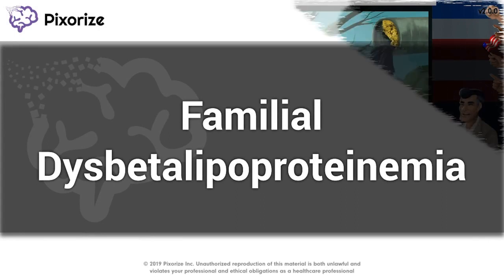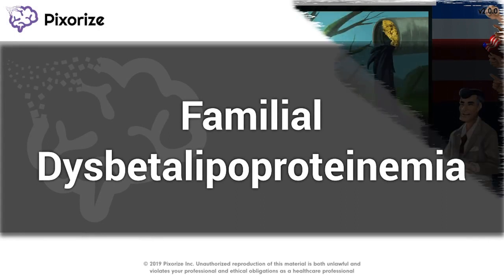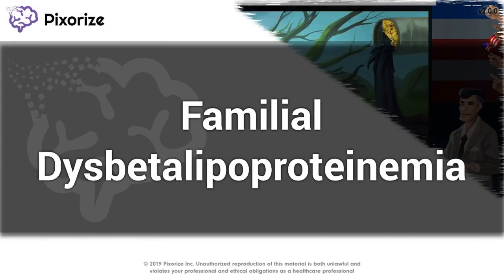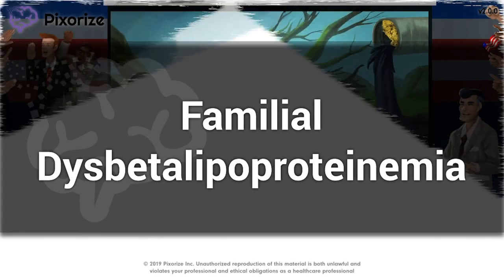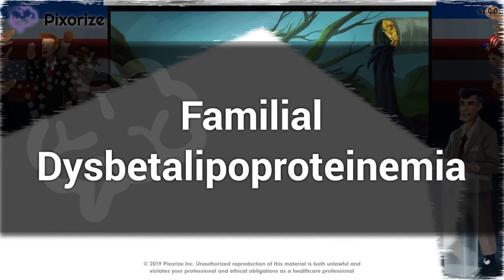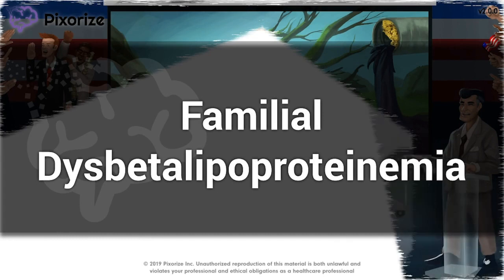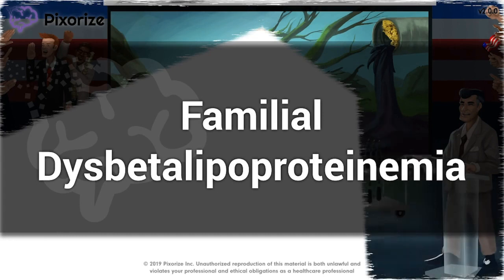Familial dysbeta lipoproteinemia, also known as type 3 hyperlipoproteinemia, is caused by a deficiency in apolipoprotein E.